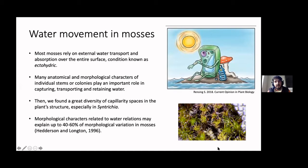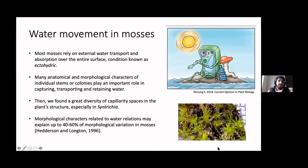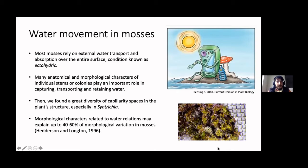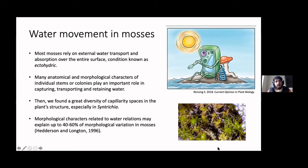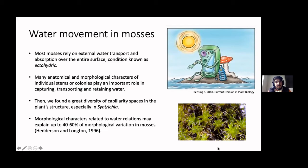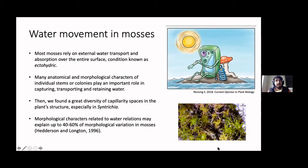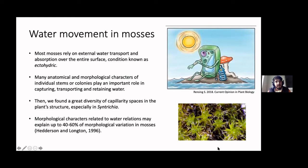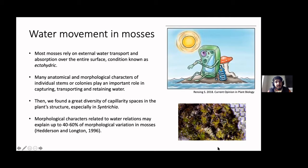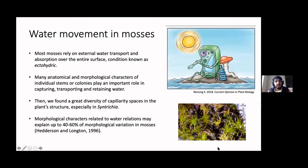And as you can imagine, there are some kind of anatomical and physical characters that may have an important role in capturing and transporting and retaining water, right? And what we usually found in these characters is that there are capillarity spaces in between them over the entire plant surface, but also there are some particular cells that help to absorb and distribute the water along the leaf surface. And especially in Syntrichia, that is such a diverse group, we can find a lot of variability in these characters. And that's why it's kind of a cool system to study this.